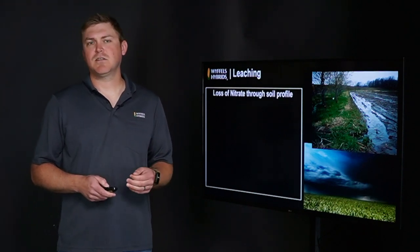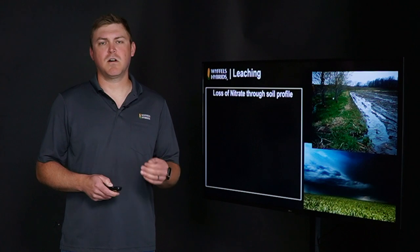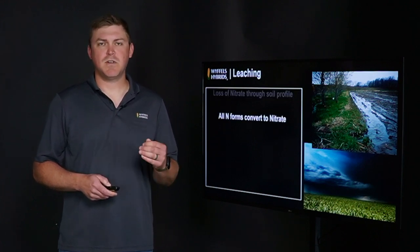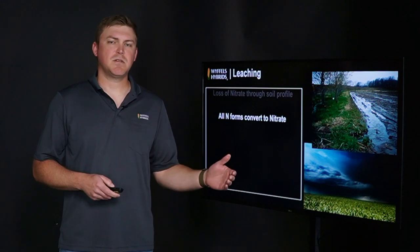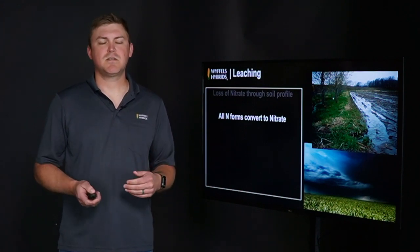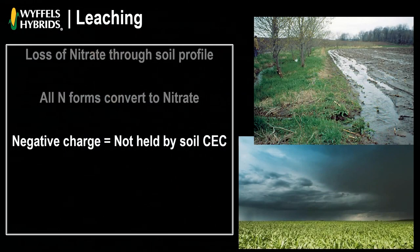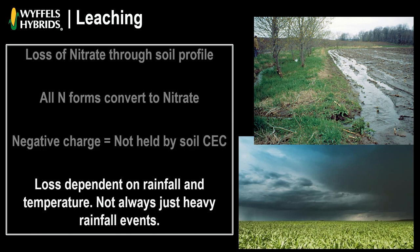Back to the first one: leaching — the loss of nitrate through the soil water profile. Nitrate is the most abundant form of nitrogen because typically under warm spring conditions all forms of nitrogen convert to nitrate. It has a negative charge, so it's not held by the soil cation exchange capacity and it readily moves with water. Losses are directly dependent on rainfall and temperature.